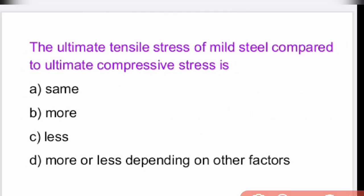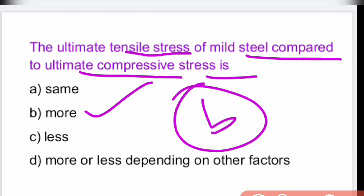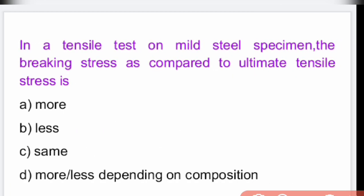The ultimate tensile stress of mild steel compared to its ultimate compressive stress is more. Tensile stress is definitely more in comparison with compressive stress — option B.